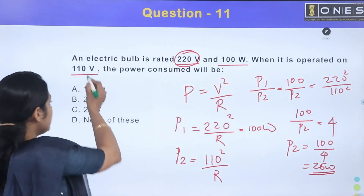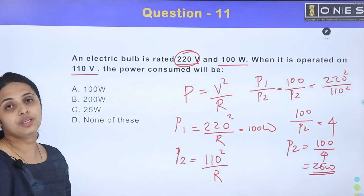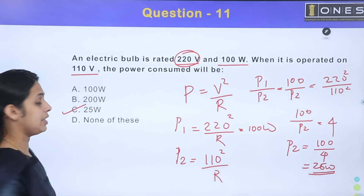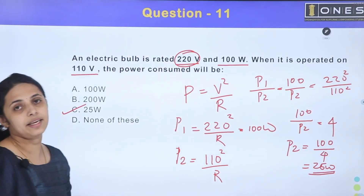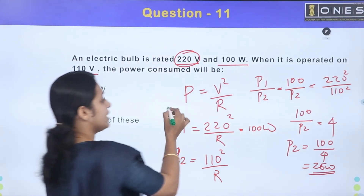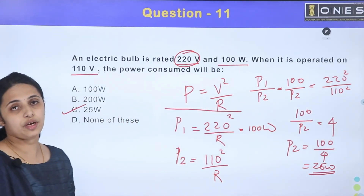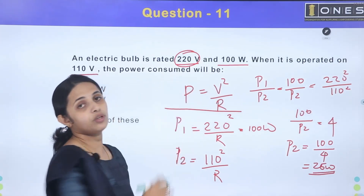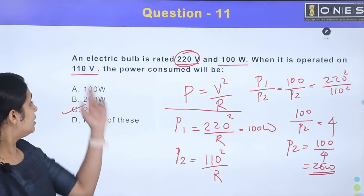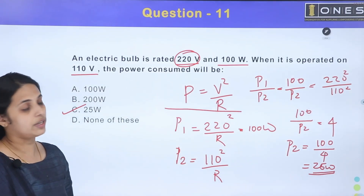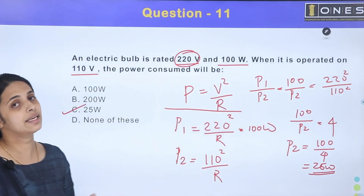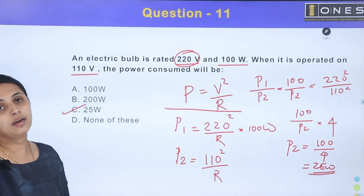The voltage is 110V. The lamp will consume less power. The correct option is 25 watts. The expression is power P equals V squared by R, so P is proportional to V². In the first case the applied voltage is 220V; in the second case it is 110V. This gives the power consumption.